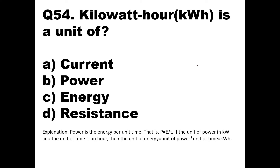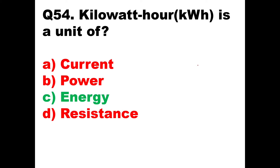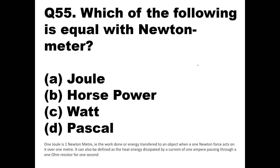Question 54: A kilowatt hour (kWh) is a unit of what? From earlier we saw that kilowatt hour is the unit of energy. Since power P = energy/time, the unit of energy equals unit of power × unit of time = kilowatt × hour = kilowatt hour. So option C — energy — is the right answer.